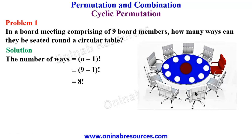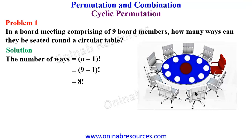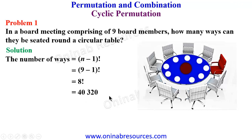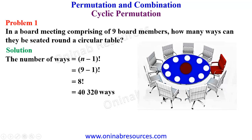If you pick one person and use that person as an edge, there's no need to consider that person again in the remaining arrangement. The only way of seating that one person, since there is 1 taking 1 seat, is 1 factorial, which is 1. So we go straight to arrange the remaining members as 8 factorial, and that gives 40,320 ways of arranging 9 board members round a circular table.